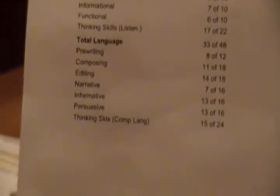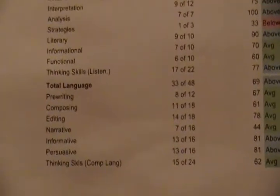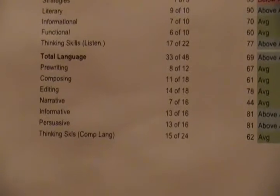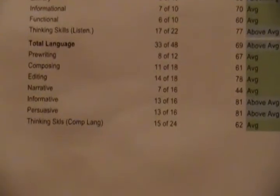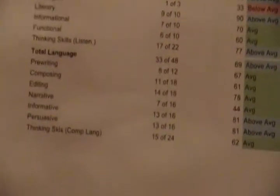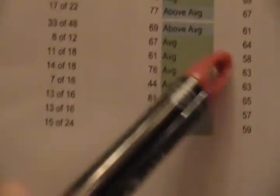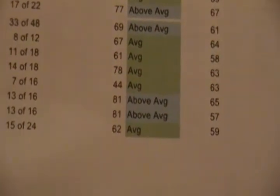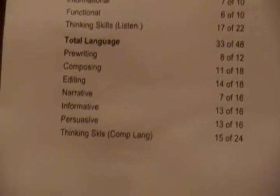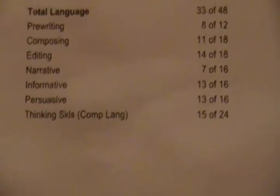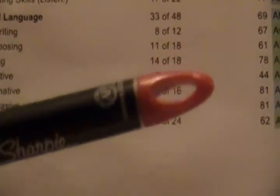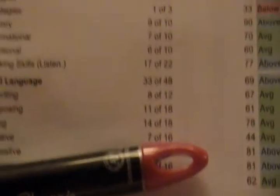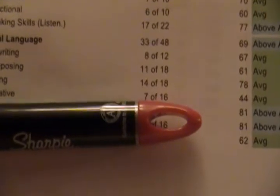The last section is the total language section. For first, second, and third graders we use form A, and for fourth through twelfth graders we use form D. That's a difference for when we want to scan our test locally — we have to use the two-part books that are form A. For language, there are 48 questions. The student answered 33 of them correct, giving her 69% correct, and the average was 61. It breaks down into pre-writing, composing, editing, narrative, informative, and persuasive, and then your thinking skills.